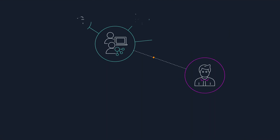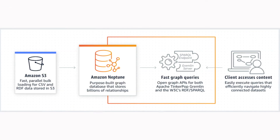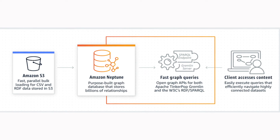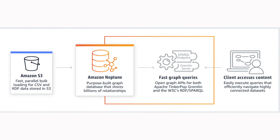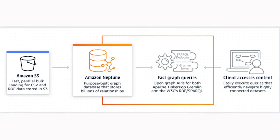Next, we have graph databases. A graph database's purpose is to make it easy to build and run applications that work with highly connected data sets. Typical use cases for graph databases include social networking, recommendation engines, fraud detection, and knowledge graphs. Amazon Neptune is a fully managed graph database service. Neptune supports both the property graph model and the Resource Description Framework (RDF), giving you the choice between two graph APIs: TinkerPop and RDF or SPARQL. Startups use Amazon Neptune to build knowledge graphs, make in-game offer recommendations, and for fraud detection.